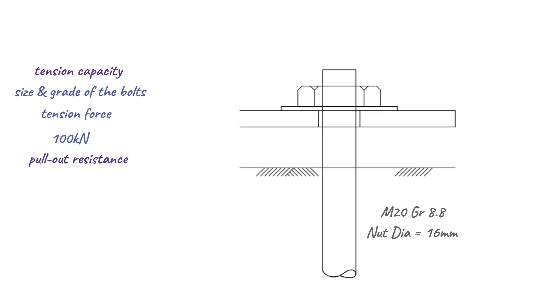To calculate the tension capacity, we use the following formula: 0.8 times tensile stress area, 245 mm², times tensile strength of bolt grade 8.8, 560 N per square mm. This gives us a tension capacity of 110.3 kN.